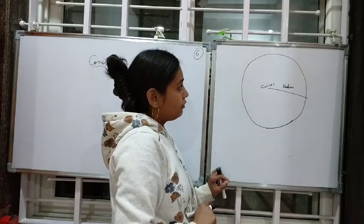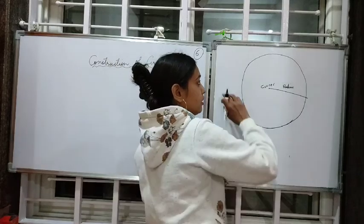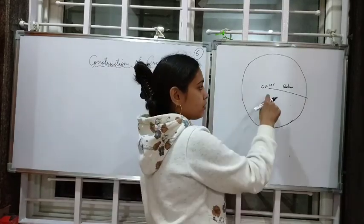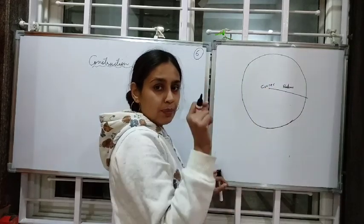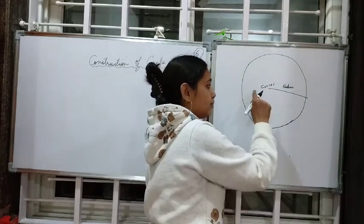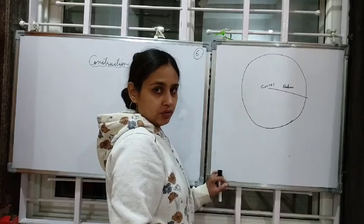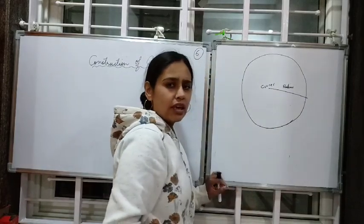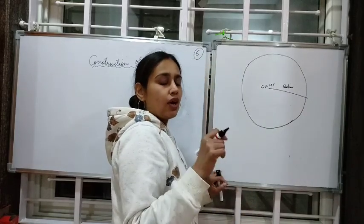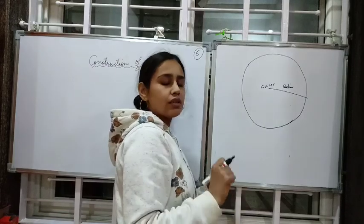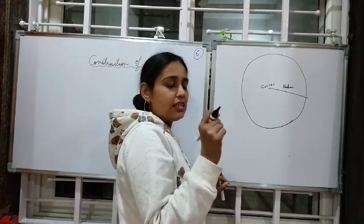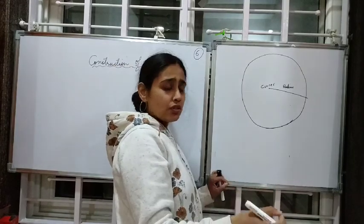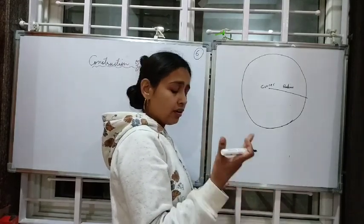It is a curved, closed figure which is equidistant from a particular point, named as the center of the circle, and the equal distance is known as the radius of the circle. This is the simple definition and explanation of a circle.